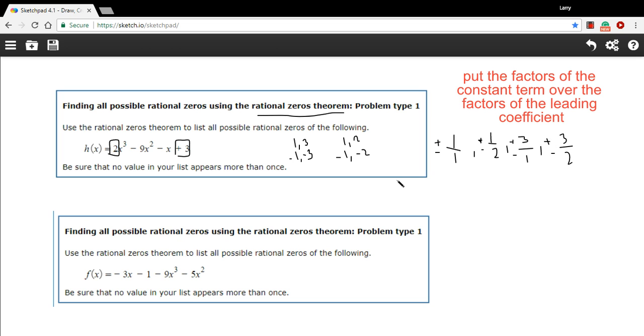So I think those are all the possible combinations we could have. There are eight possible zeros here. Let me rewrite these in a list that makes more sense. We could have ±1/2. I'll put them in increasing order. We could have ±1, ±3/2, and ±3.